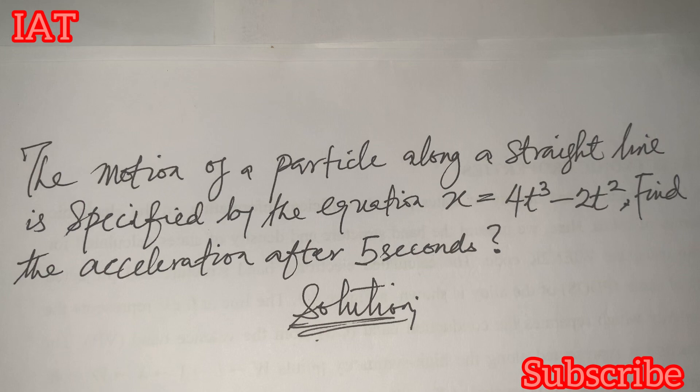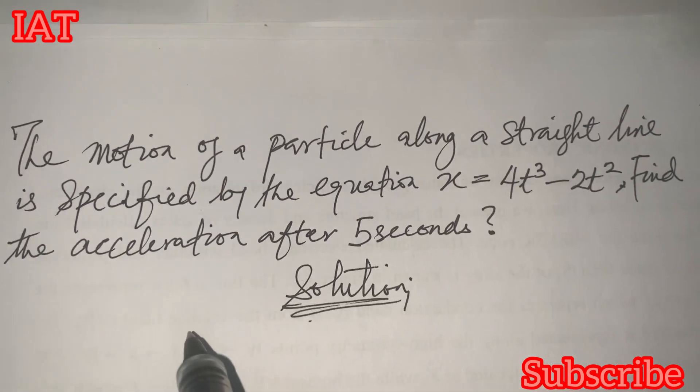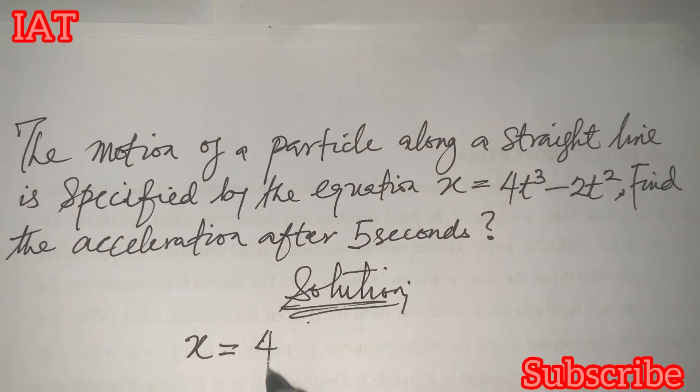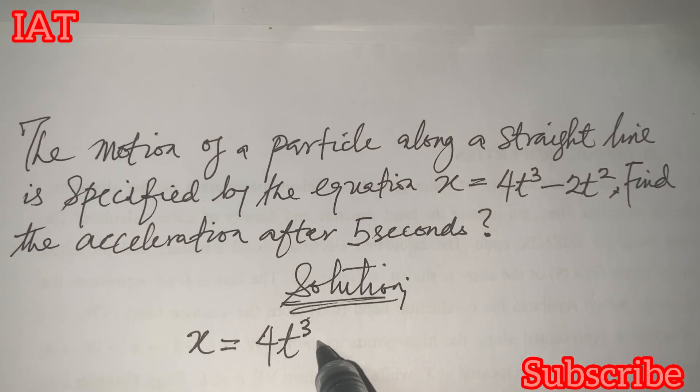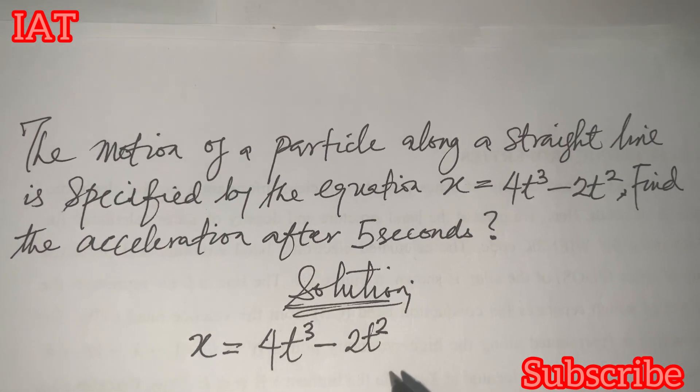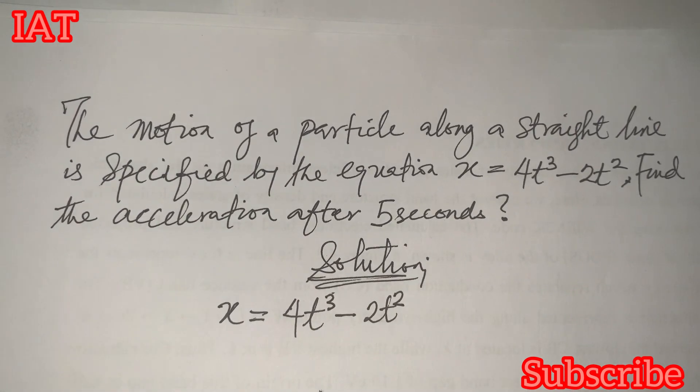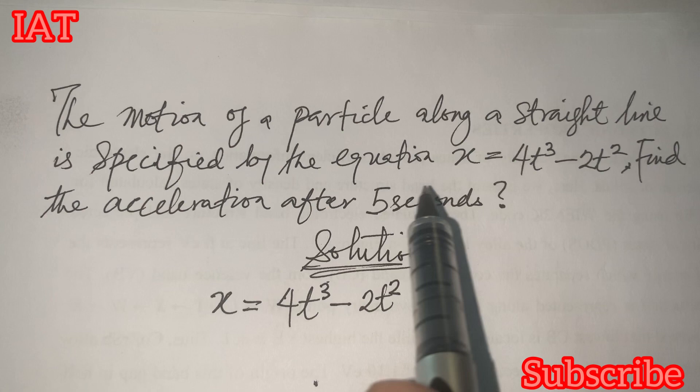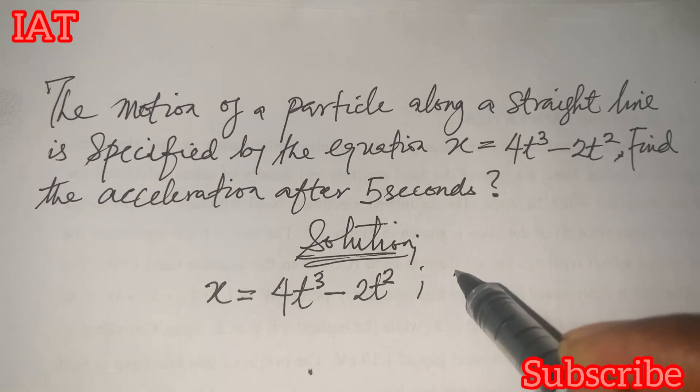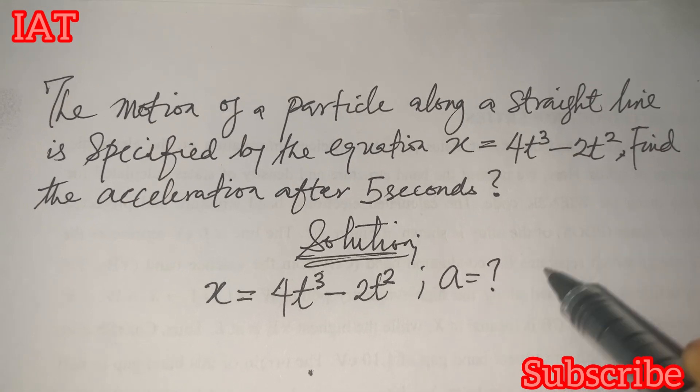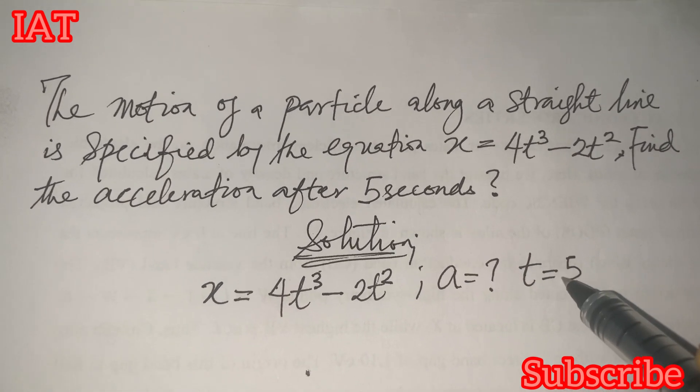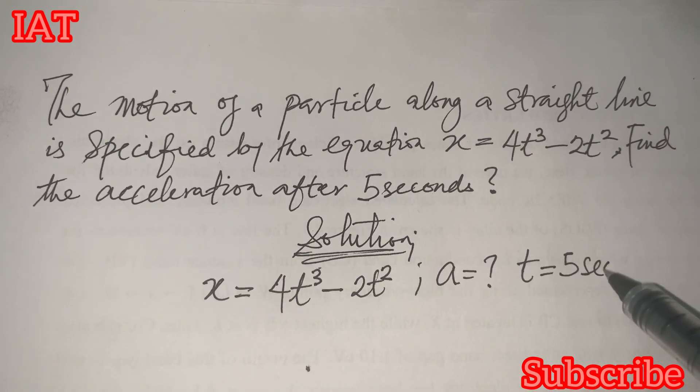by the equation x. Let's put down that equation. x equals 4t³ minus 2t². So, we are asked to find the acceleration after 5 seconds. So, we are going to look for the acceleration a after 5 seconds.